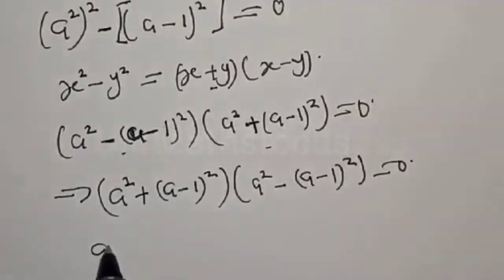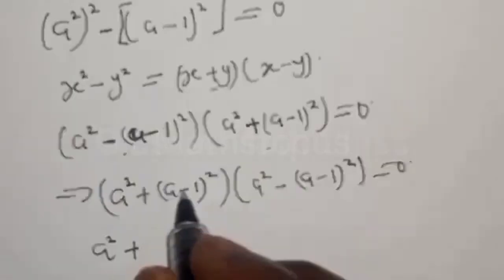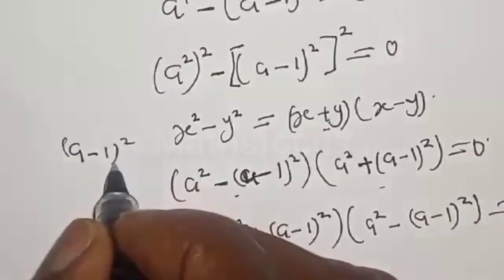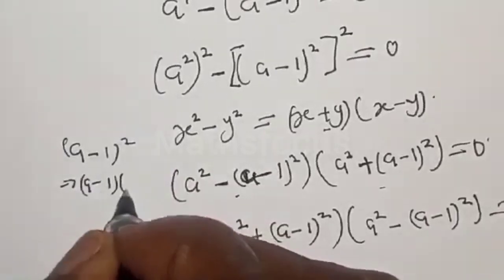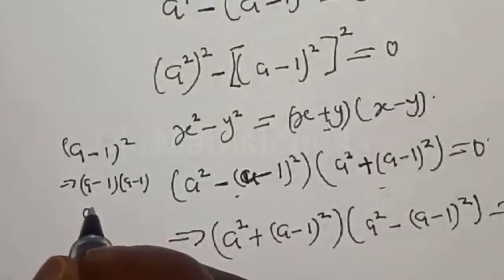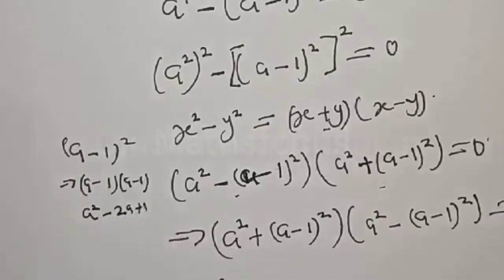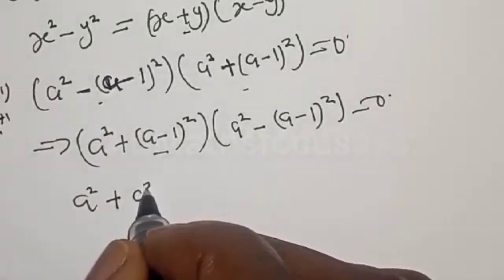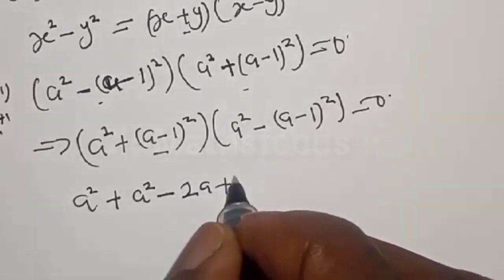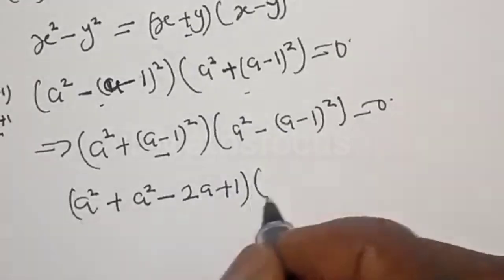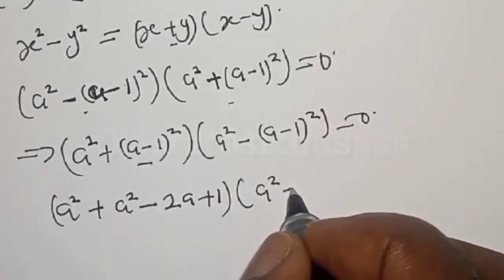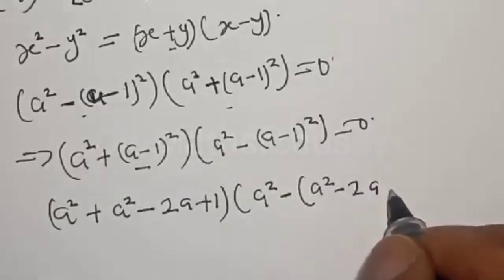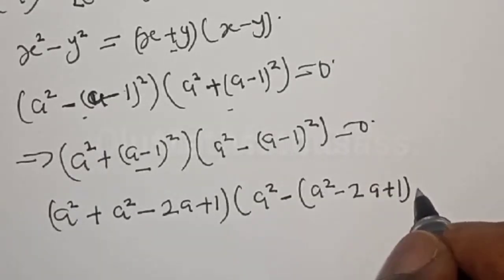Let's open the brackets. We have A square plus A minus 1 square. Now, A minus 1 square is the same as A minus 1 multiplied by A minus 1, giving us A square minus 2A plus 1. So A minus 1 square equals A square minus 2A plus 1. We substitute: A square plus A square minus 2A plus 1, multiplied by A square minus A square minus 2A plus 1, equal to 0.